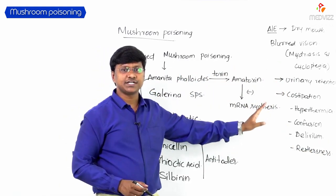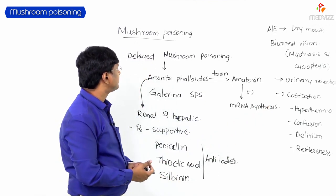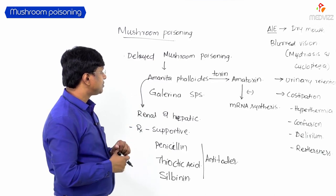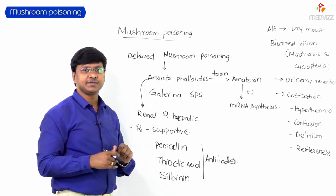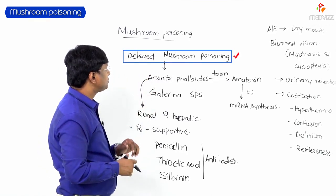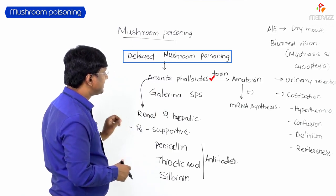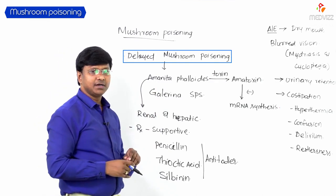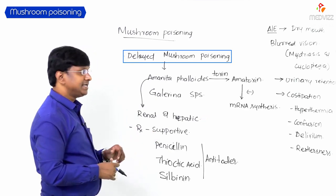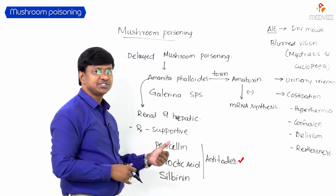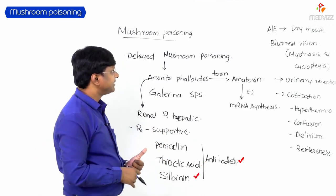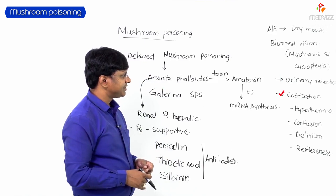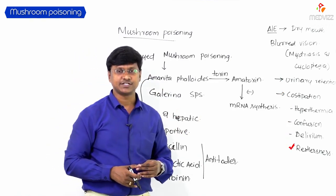These are all the adverse effects associated with drugs used in the treatment of Amanita phalloides poisoning. In summary: early mushroom poisoning has symptom onset within 30 minutes; delayed mushroom poisoning is caused by Amanita phalloides and Galerina species, with amatoxin inhibiting mRNA synthesis, causing hepatic and renal dysfunction. Treatment is supportive with antidotes penicillin, thioctic acid, and silbinin. Adverse effects include dry mouth, blurred vision, urinary retention, constipation, hyperthermia, confusion, delirium, and restlessness.